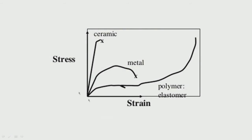Looking at the stress-strain diagram: for a metal you have the elastic region then the plastic region; for a polymer it can go quite far; for ceramics it will have a high modulus but very high crack propagation — it is not tough. So it cannot be used in applications where tension is expected — it will just snap. You do not see a plastic region at all unlike metals.